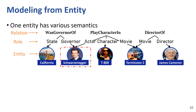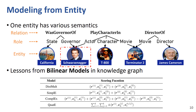Then, I will introduce our modeling design for the entity and role aspects one by one. From the entity aspect, through this example, we notice that one entity can have more than one meaning or semantics in a knowledge base. For example, the entity Schwarzenegger has a politician semantics to the relation 'was governor of,' and has a star semantics to the relation 'play character in.' On the other hand, we rethink the powerful bilinear models in traditional knowledge base. In the table below, we found that although these models propose different designs for scoring function, in fact, these designs reach the same point: that each entity has multiple embedding vectors. Therefore, we design a multi-embedding mechanism, giving an entity multiple embeddings for its multiple semantics.